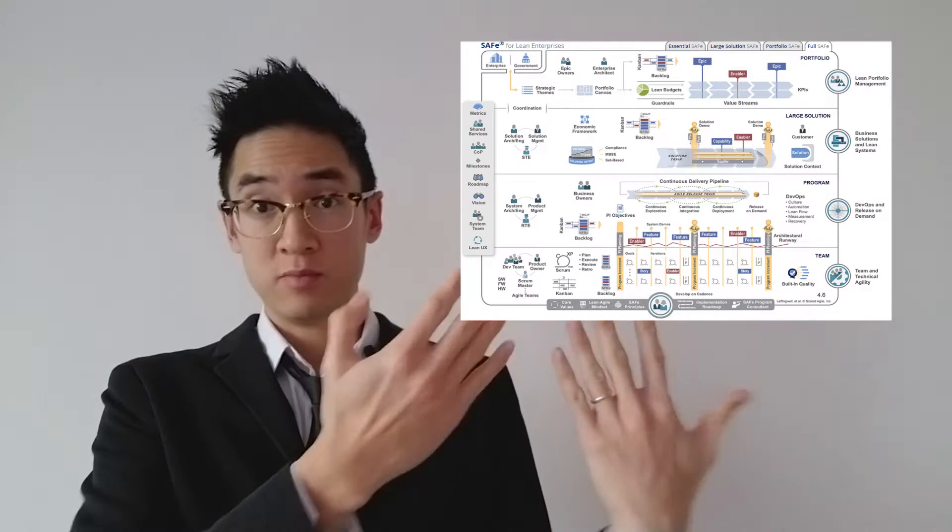The second mistake that I encounter in my experience is to force the organization to apply SAFe exactly the same way as described in the picture. It's very complicated to apply exactly the details of this picture to an organization, because all organizations have their own constraints, their own organization structure.